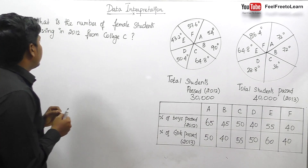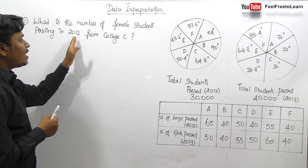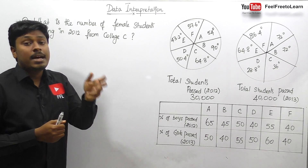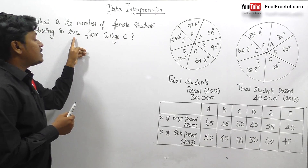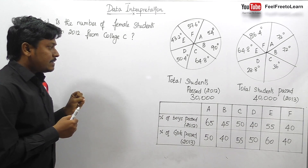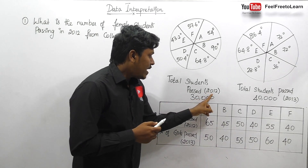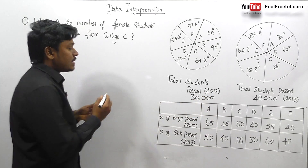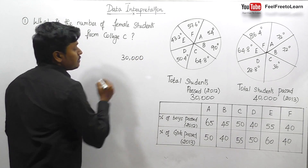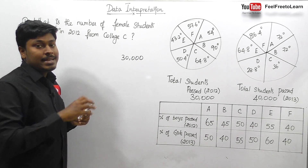Question number 1: What is the number of female students passing in 2012 from College C? Our target is to find how many female students passed in College C in the year 2012. In 2012, we know that the total number of students is 30,000. We need to see how many students are studying in College C.